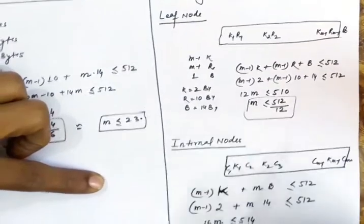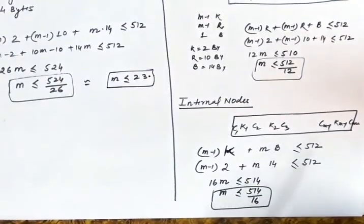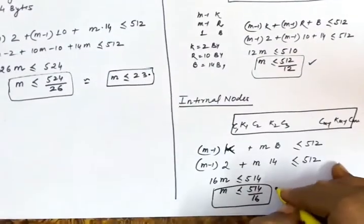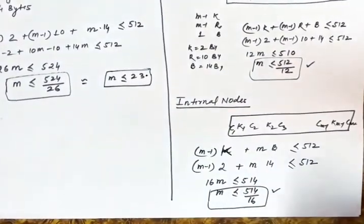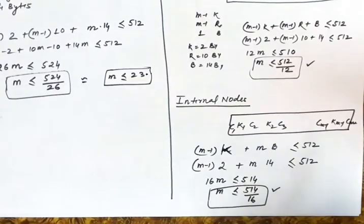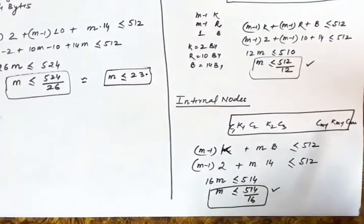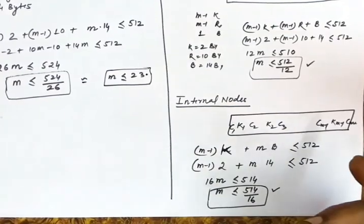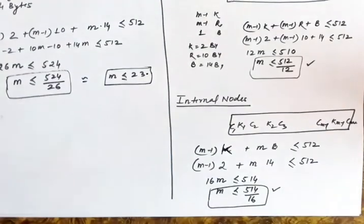You can see that in the B+ tree, the order of the leaf node and the order of the internal nodes is different. Although we can take the minimum of these two and build a B-tree, if you want to design a B+ tree, then the order of the leaf node and the order of the internal nodes can be made different. Thank you.